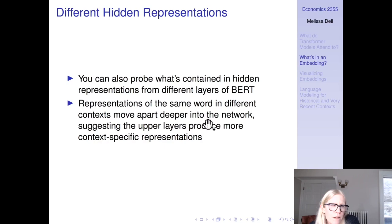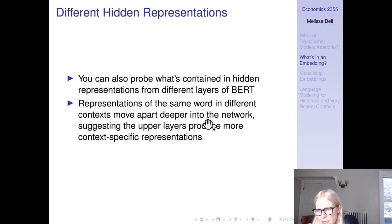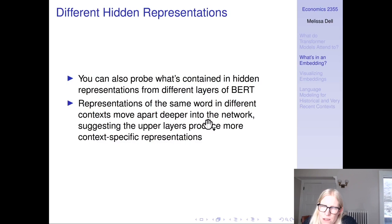You can also probe what's contained in hidden representations from different layers of BERT, which stacks a bunch of different transformer blocks. Representations of the same word in different contexts tend to move apart deeper into the network, suggesting that upper layers provide more context-specific representations. At each layer it has the opportunity to flexibly attend to every other token in the context, so as it passes through multiple layers the representations get more and more contextualized — the same word used in different contexts has different representations.